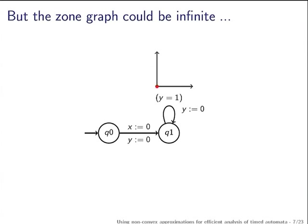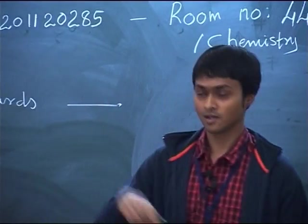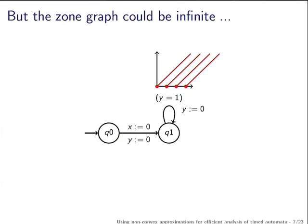For example, you reach state Q1 with both valuations equal to 0, elapse time, and want to take the self-loop. Only the valuation with Y equal to 1 can take the self-loop, and after taking the transition it sets Y back to 0. Then you elapse time, and you have a new zone. You end up visiting an infinite number of zones — the algorithm is non-terminating.